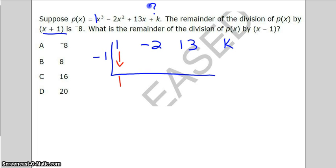So the 1 comes down. Negative 1 times 1 is negative 1. Then we add these. Negative 2 and negative 1 gives us negative 3. Well, negative 3 times negative 1 is 3. So we add those. 13 and 3 gives us 16.